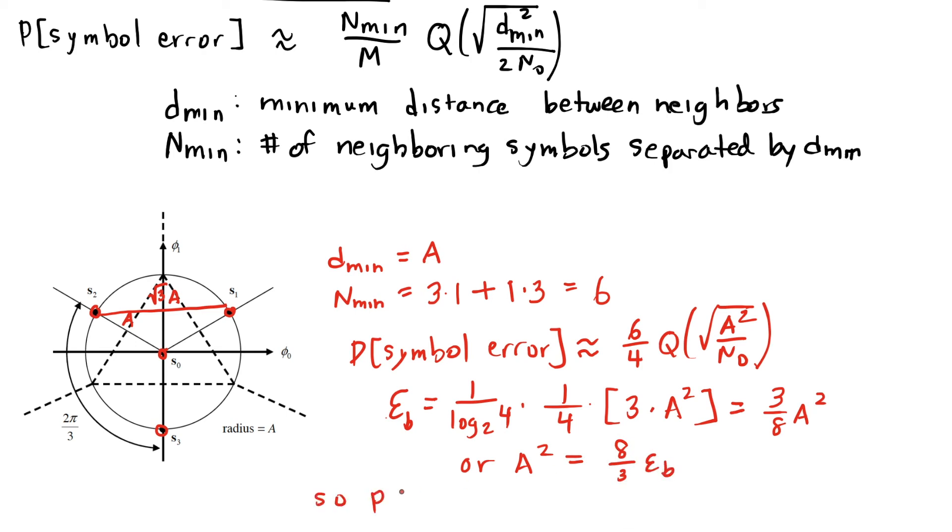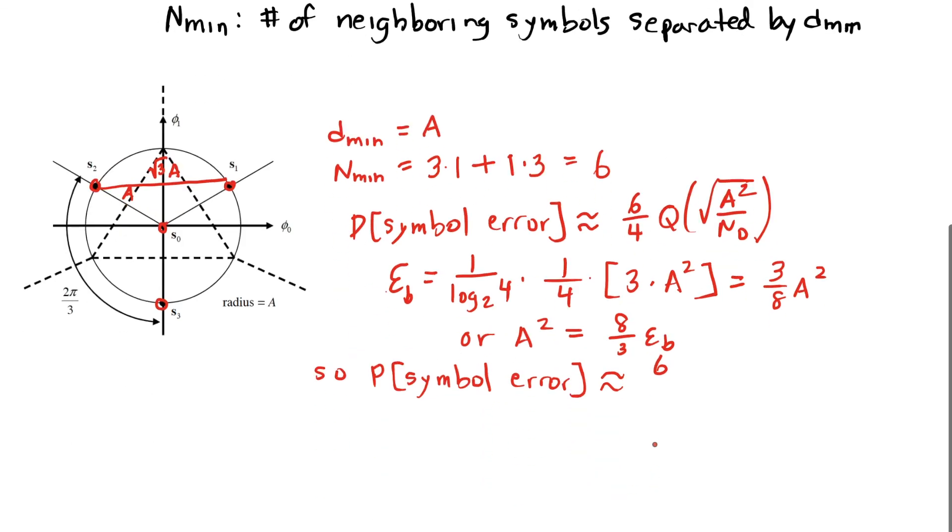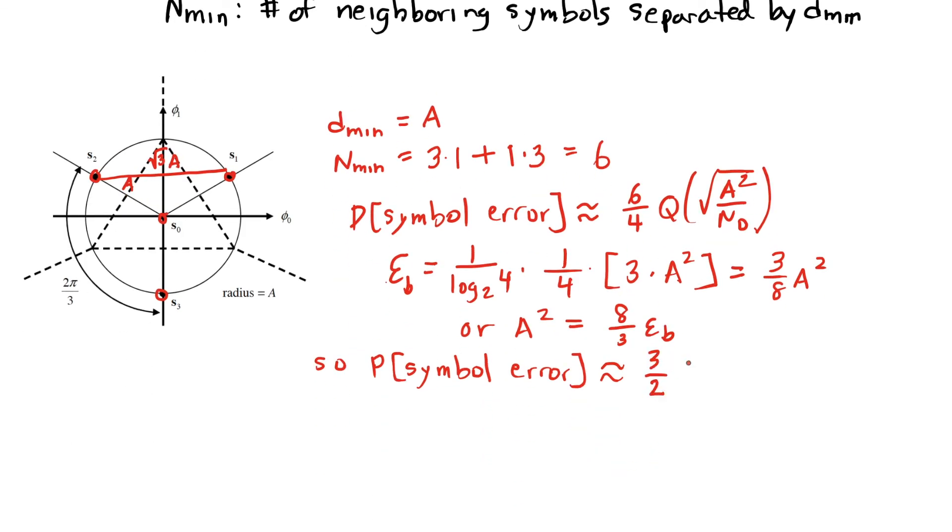So the probability of symbol error simplifies to 3 halves times the Q function, plugging in 8 thirds Eb over N0 into the square root. That becomes our overall nearest neighbor approximation.